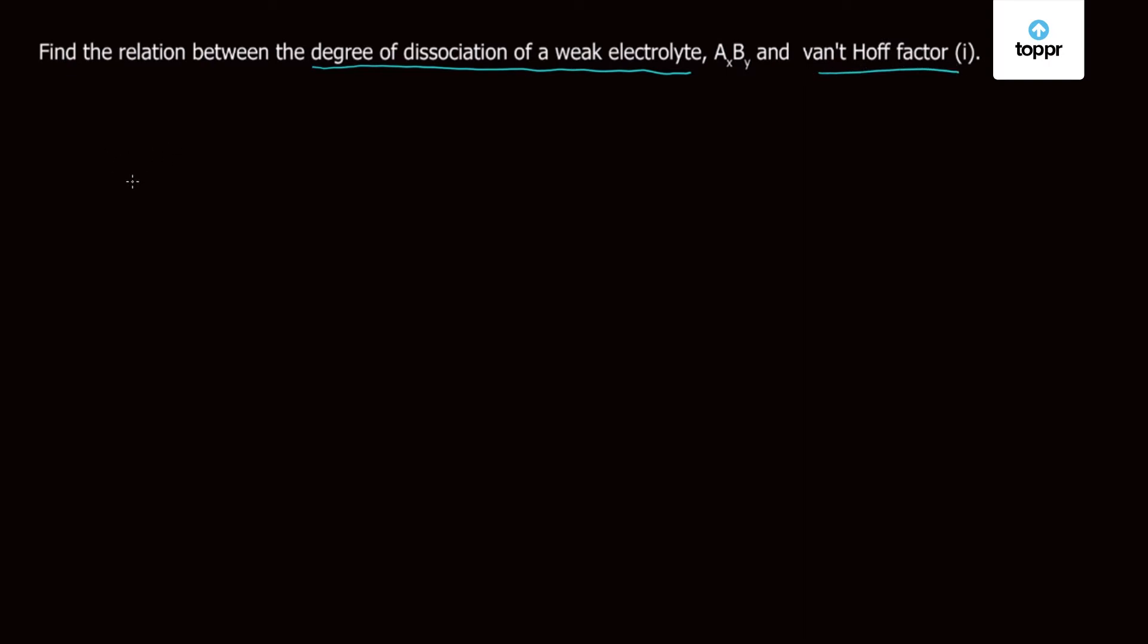Let's try to solve this question. This weak electrolyte AxBy dissociates as x times A^(y+) plus y times B^(x-). Initially, there is one mole of AxBy present.